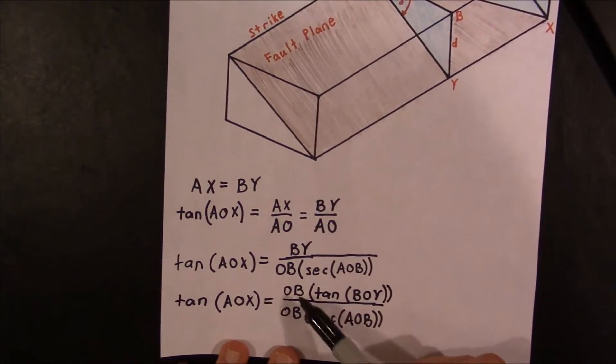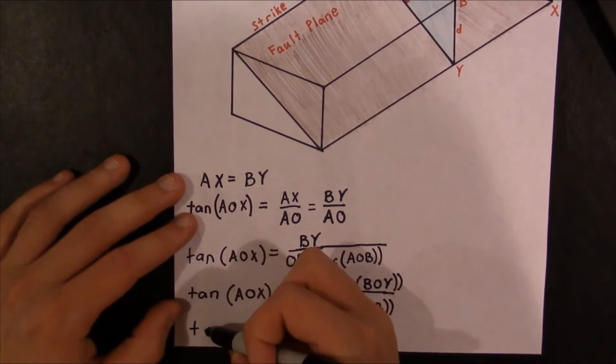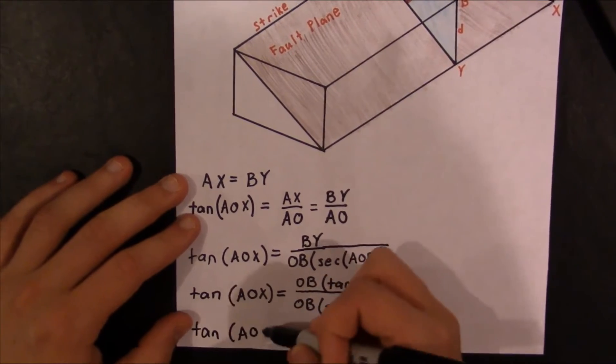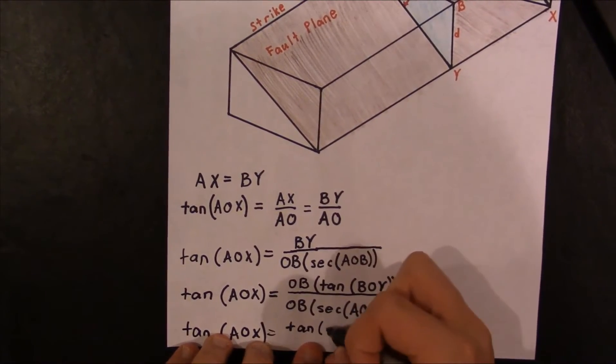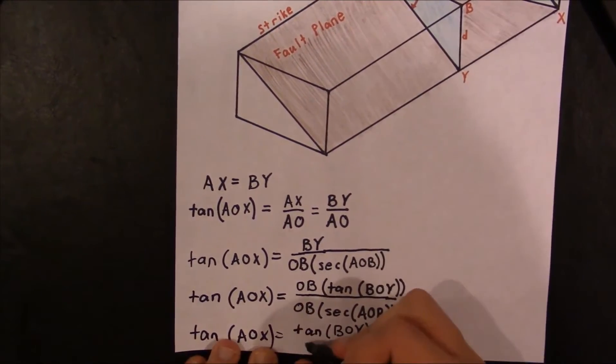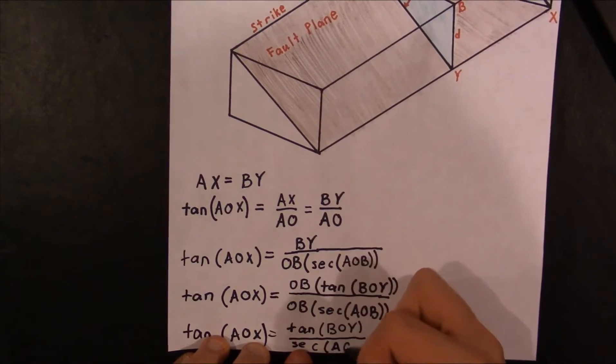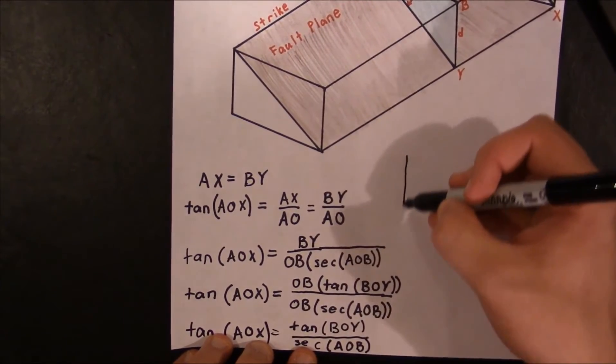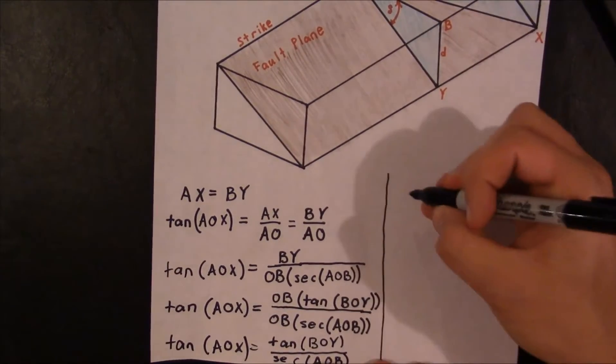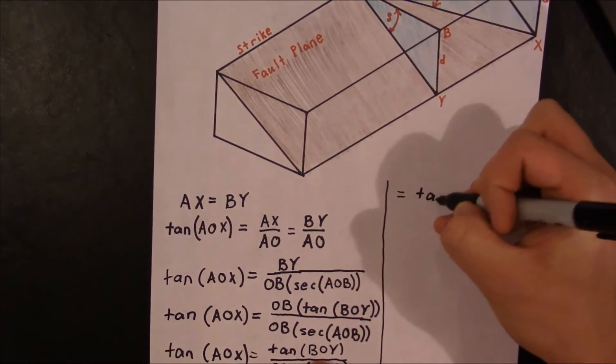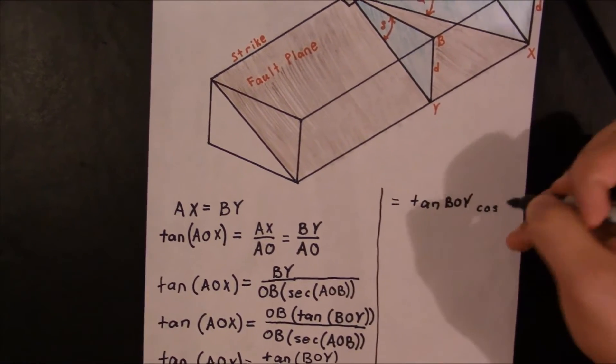All right, from here what you're going to notice is that OB is on the numerator and denominator, so we can cancel both of those. And we're just left with tangent of AOX equals the tangent of BOY over the secant of AOB. And we can similarly represent this as tangent BOY times the cosine of AOB.